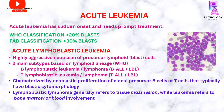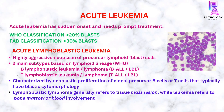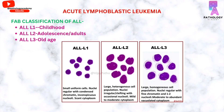ALL is a highly aggressive neoplasm of precursor lymphoid cells or lymphoblasts. There are mainly two subtypes: B-lymphoblastic leukemia or lymphoma, and T-lymphoblastic leukemia or lymphoma. ALL is characterized by neoplastic proliferation of clonal precursor B cells or T cells that typically have blastic lymphoblastic cytomorphology.